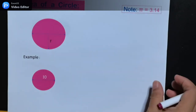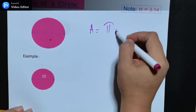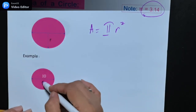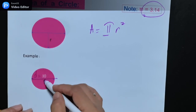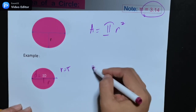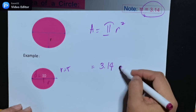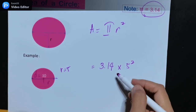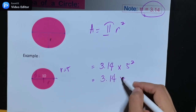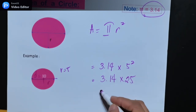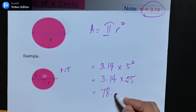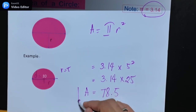Next, area of a circle. The area of a circle is pi times r squared, where pi = 3.14. From the given example, the diameter is 10, so the radius is 5. So the area is 3.14 times 5 squared, which is 3.14 times 25. The area is 78.5.